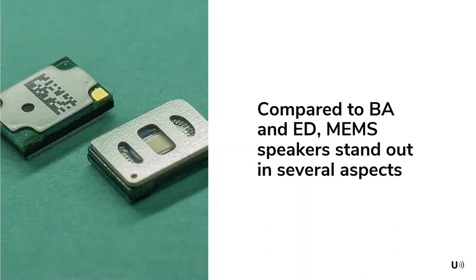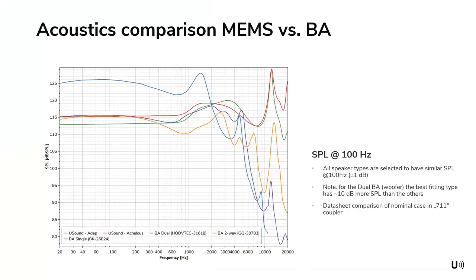Now comparing the MEMS loudspeaker versus the balanced armature loudspeaker. You can see the green and red curves — our two MEMS components — compared to balanced armature references. The bandwidth of the MEMS loudspeaker is much wider compared to all benchmarked parts. This measurement is done with a so-called 711 coupler — an occluded ear application. From 20 Hz up to 20 kHz, the MEMS loudspeaker covers full bandwidth with almost constant SPL, which is not the case for balanced armature.